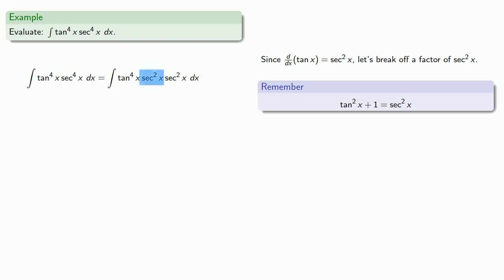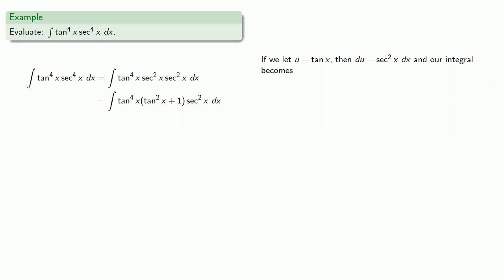This remaining factor of secant squared can be replaced. If we make the substitution u equals tangent x, then du equals secant squared x.